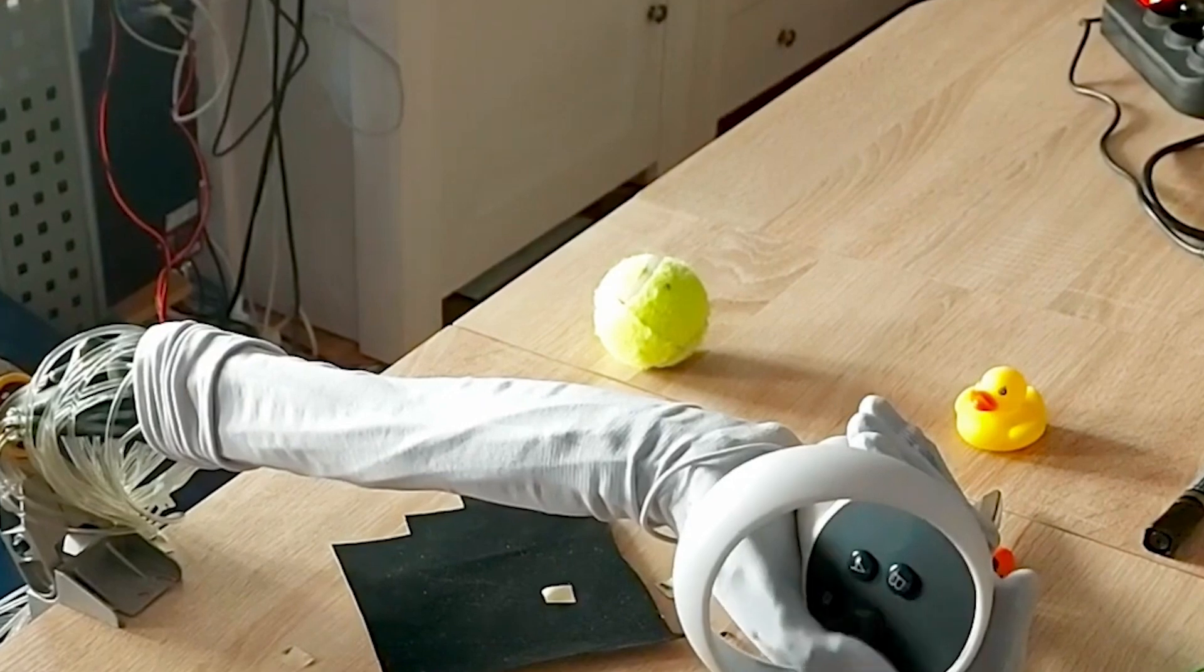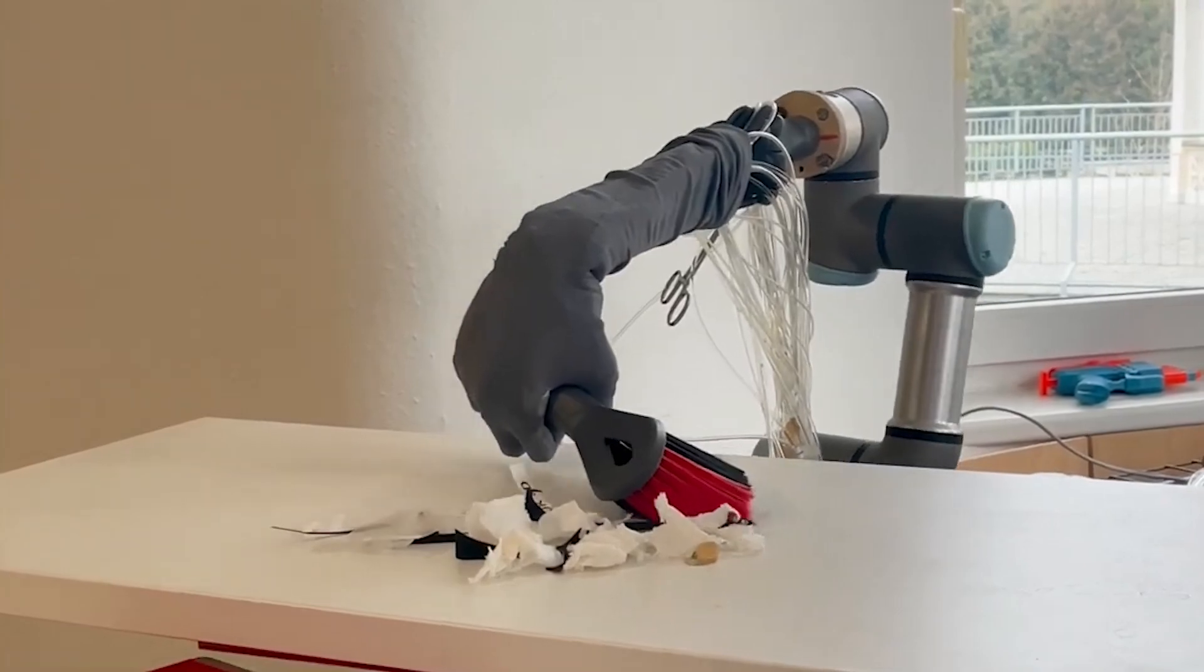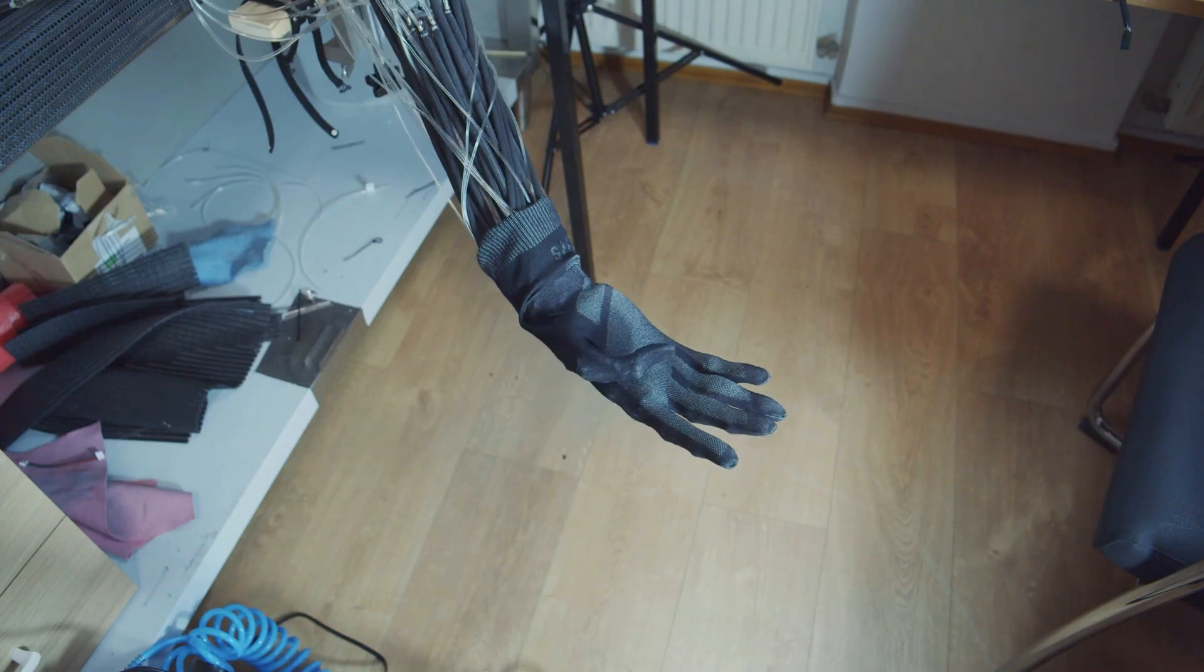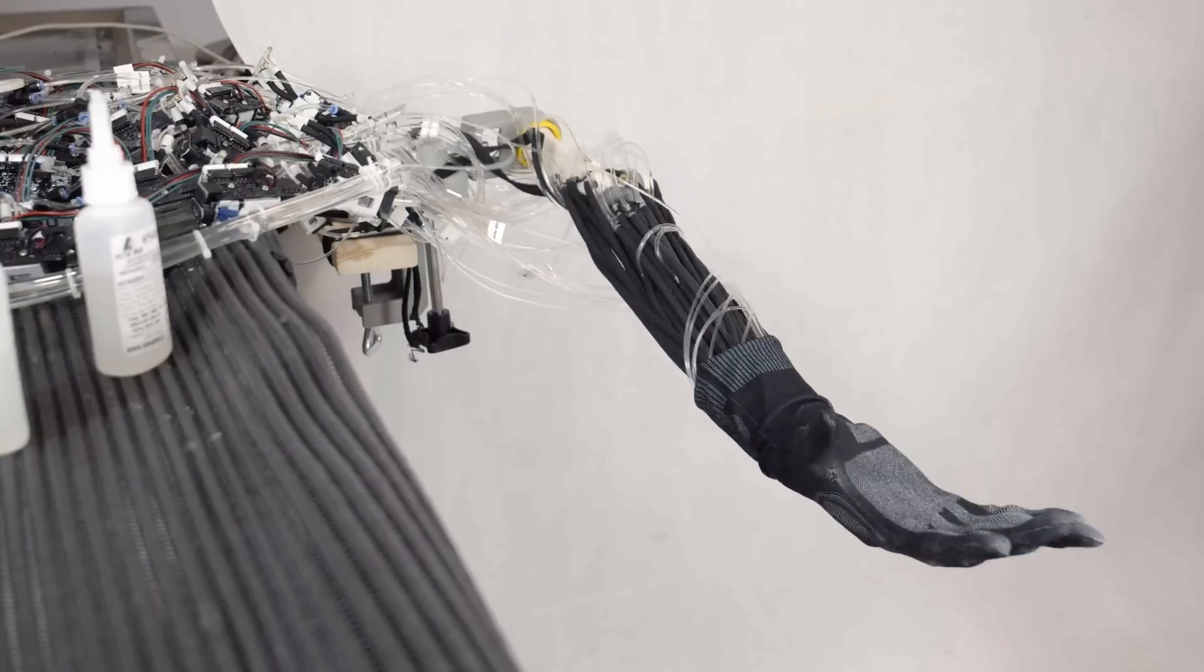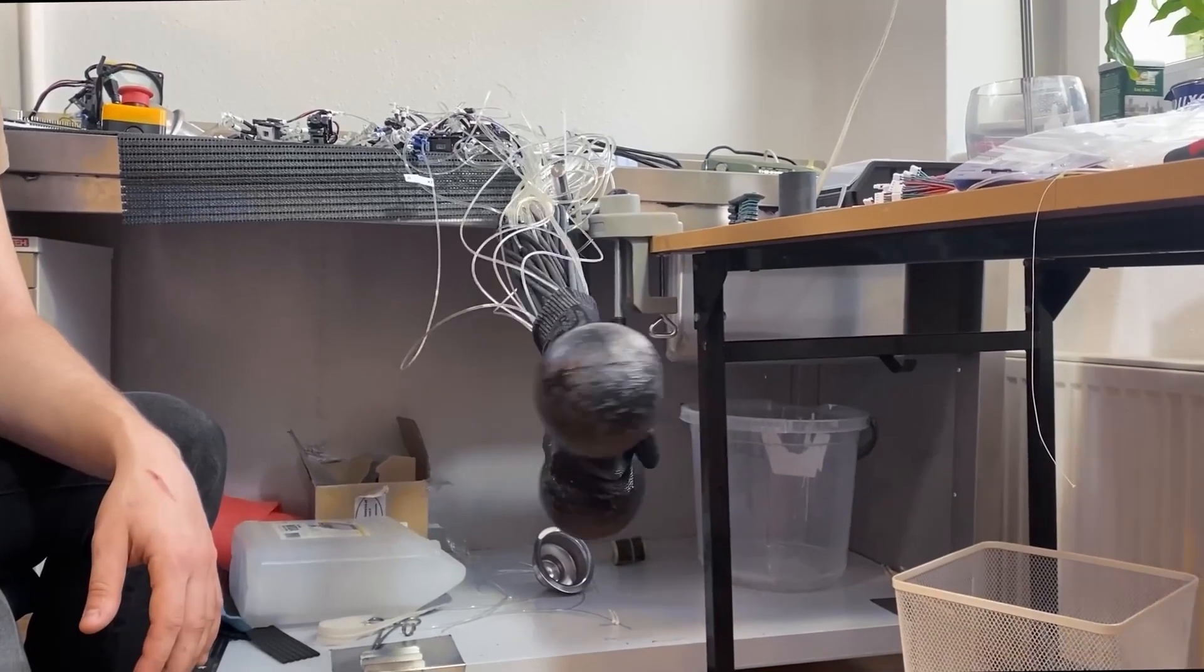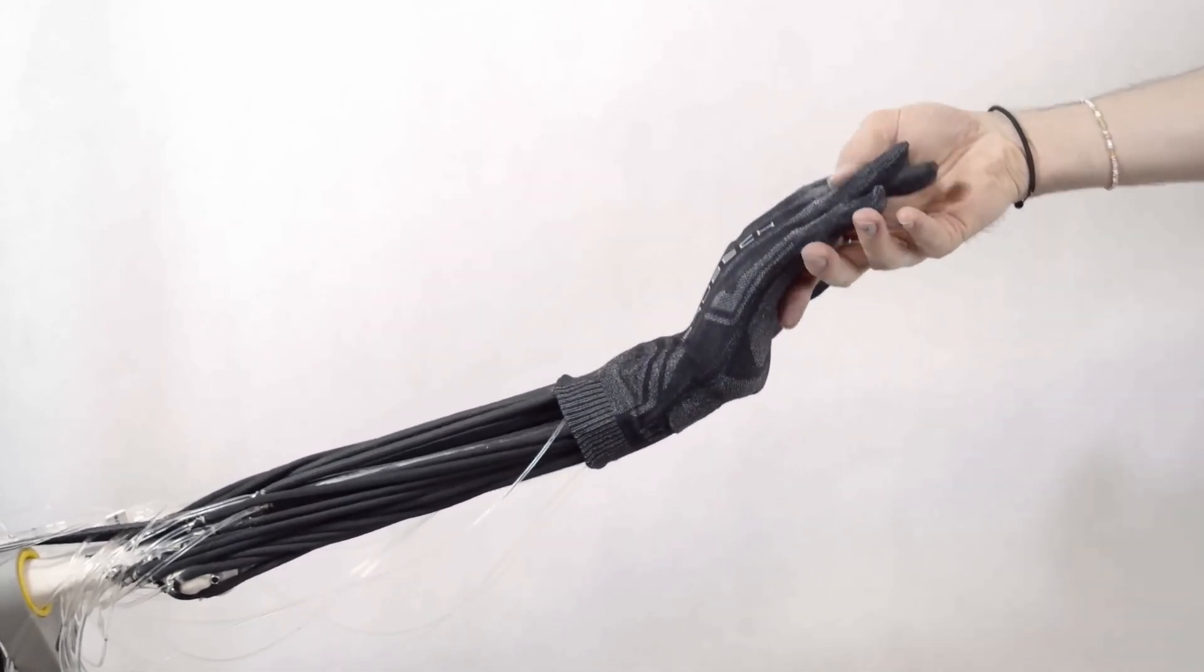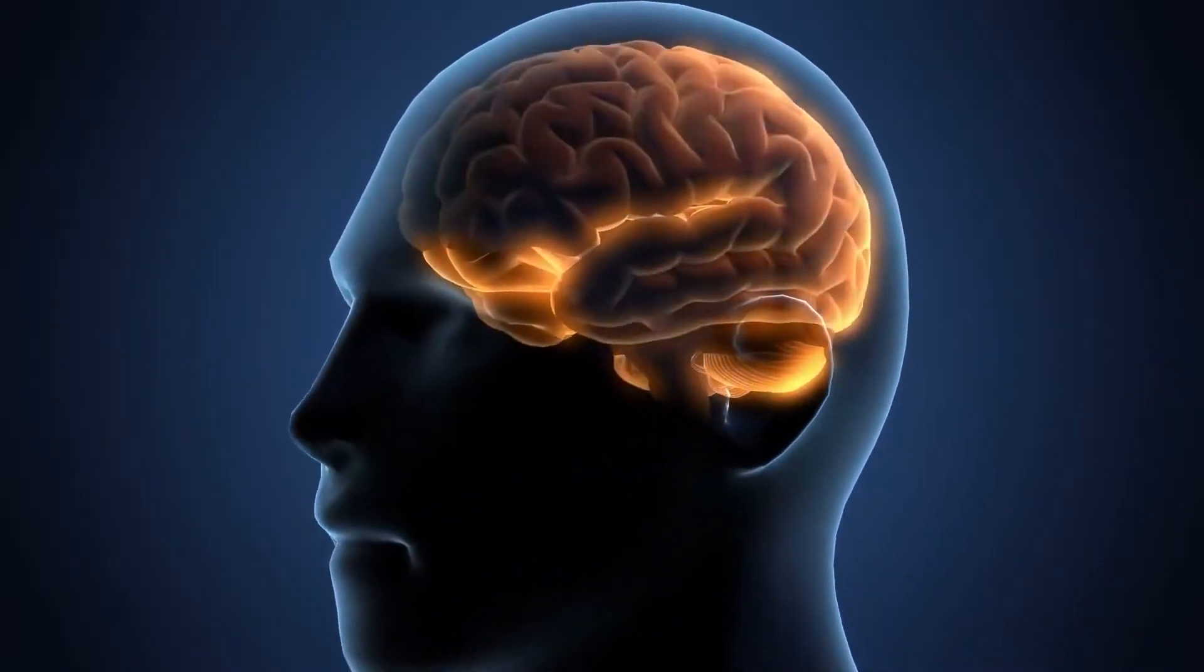How did Clone Robotics achieve this? The Protoclone is built with a combination of cutting-edge materials and technologies. The robot has more than 1,000 artificial muscles, which give it the ability to mimic the complex movements of the human body. These muscles work in conjunction with over 500 sensors placed throughout the robot, allowing it to perceive its environment and respond dynamically. The sensor network plays a crucial role in the robot's fine-tuned movements, enabling it to adjust to changing conditions in real-time.